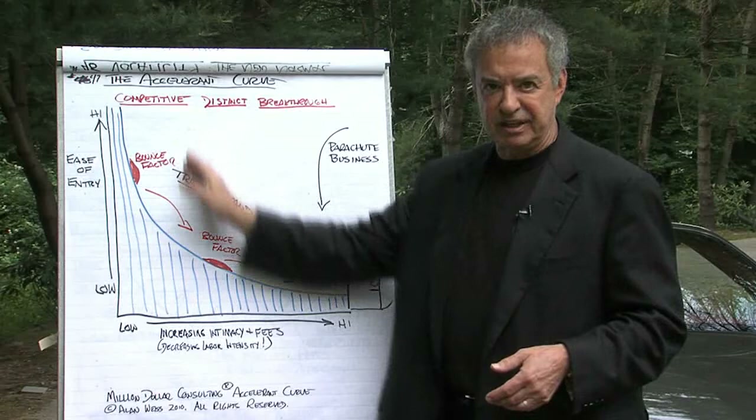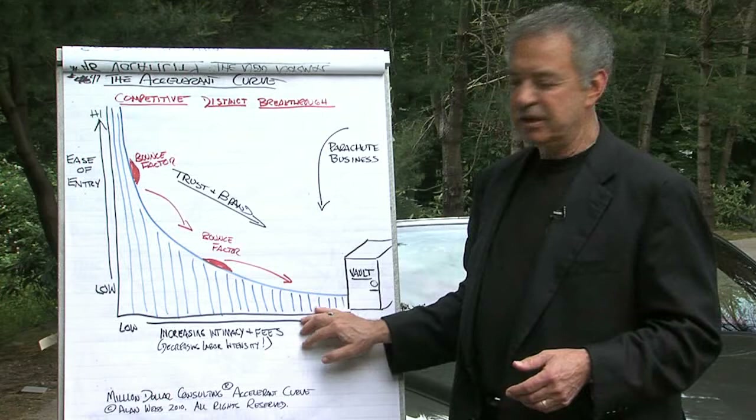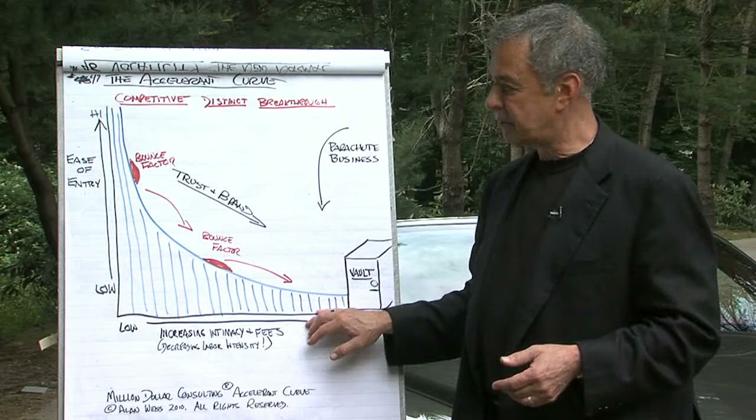Toward the left, offerings tend to be competitive — most people offer these things, non-differentiated. Toward the middle, however, they're distinct — very few people offer them, and they're more reliant on you and your value. And over here on the right, they're breakthrough — only you offer these. So naturally, as intimacy increases, these are more reliant simply on you.